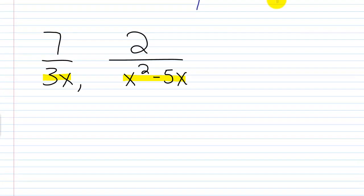And let's see what we get when we do that. Well, 3x is basically just 3 times x. And then if I think about x squared minus 5x, the way that I'm going to factor that is I'm going to pull an x out. So this is going to be x times x minus 5.